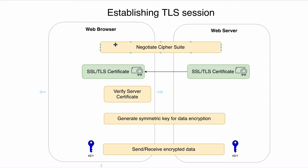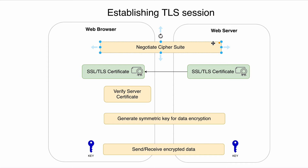When the web browser connects to the web server via HTTPS and the TCP session is established, we start establishing the TLS session. The first thing the web browser does is send the web server a list of supported cipher suites. The web server then chooses one cipher suite from this list, and this step is called negotiation of the cipher suite.